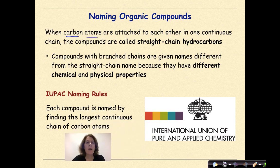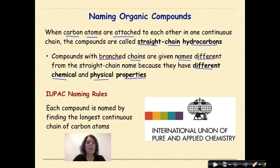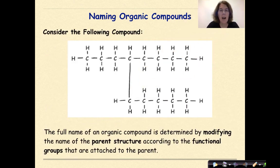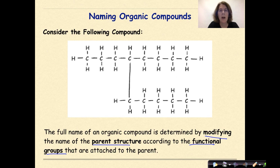When carbon atoms are attached to each other in one continuous chain, the compound is called a straight-chained hydrocarbon. Compounds with branched chains are given names different from the straight chain name because they have different chemical and physical properties, where each compound is named by finding the longest continuous chain of carbon atoms. The full name of an organic compound is determined by modifying the name of the parent structure according to the functional groups that are attached to the parent. So obviously this is not a straight-chained hydrocarbon — there's a branch coming off. Our job here is to figure out how to name this.